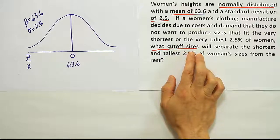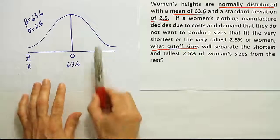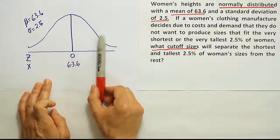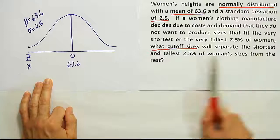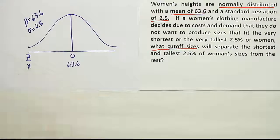If that's the case, we're using the table backwards and we're always thinking we've got to put a cut in the table somewhere. In this case, we're going to put two cuts in the table. This way, we separate the shortest and the tallest 2.5% of women's sizes.